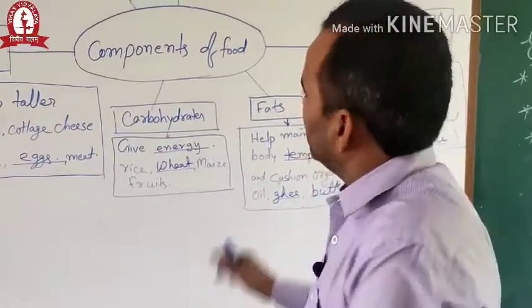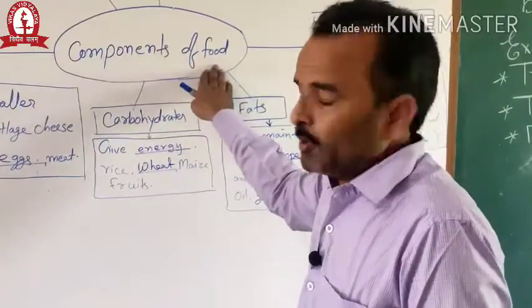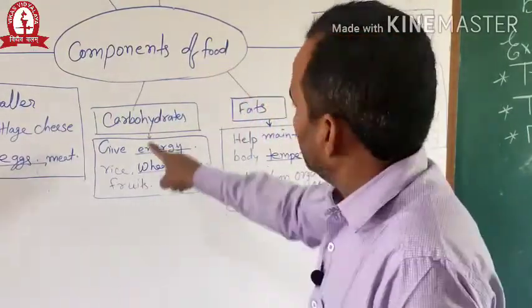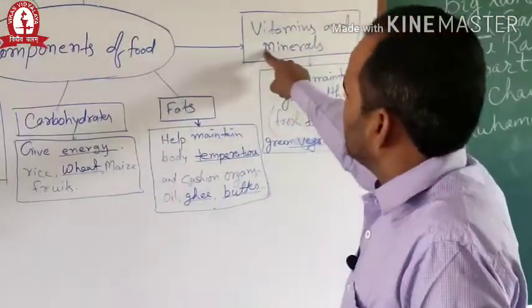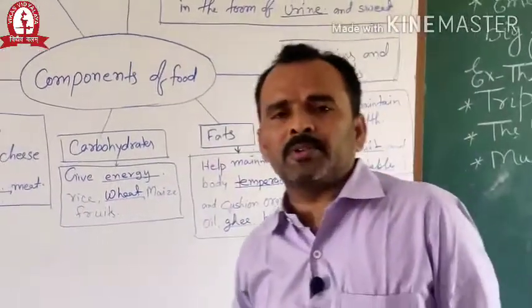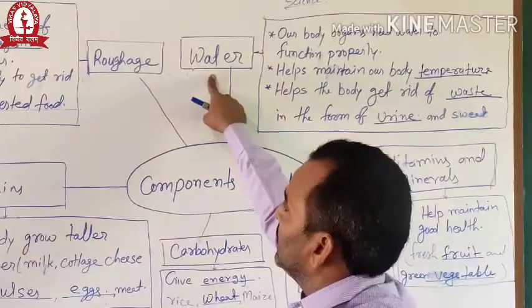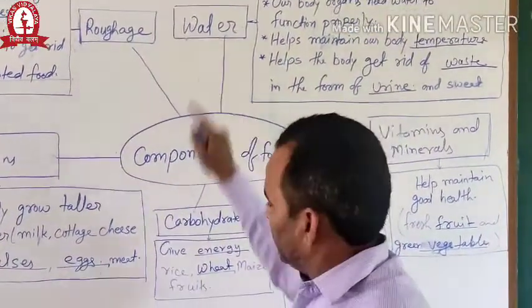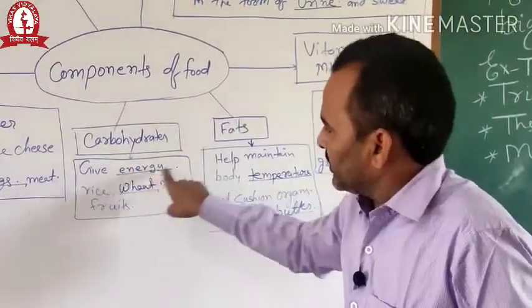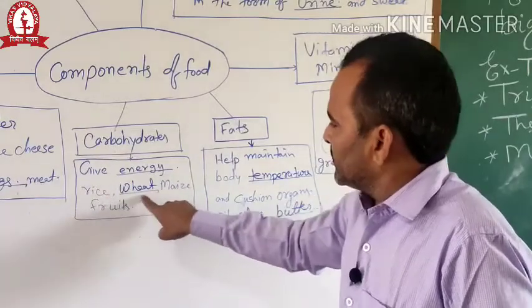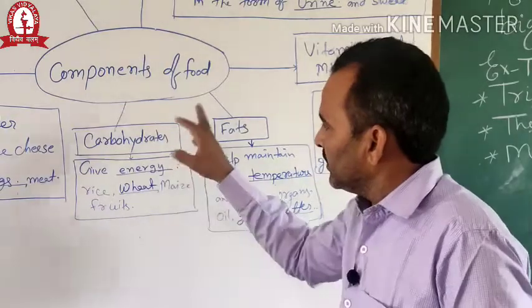Once again, I want to explain this chart properly. In this chapter, we learn about components of food. The nutrients — carbohydrate, proteins, vitamins, minerals, and fats — are all necessary for our body. Roughage and water are also important. Carbohydrate gives energy. Rice, wheat, maize, and fruits are the food items which give us carbohydrate.